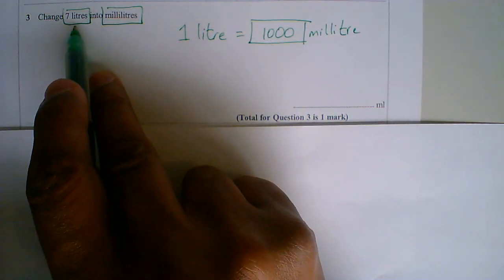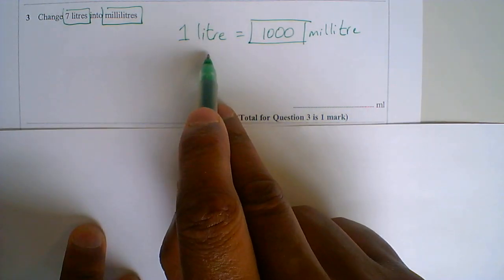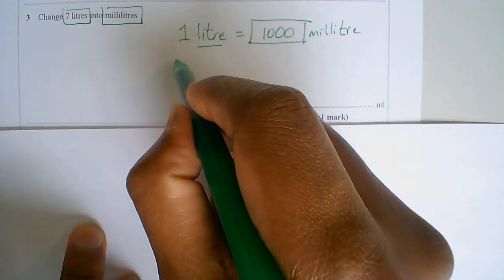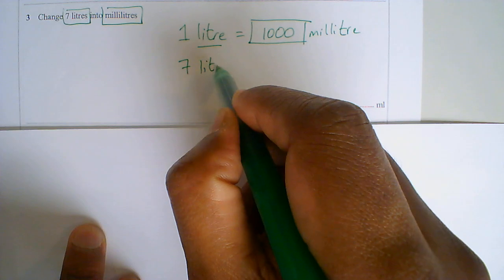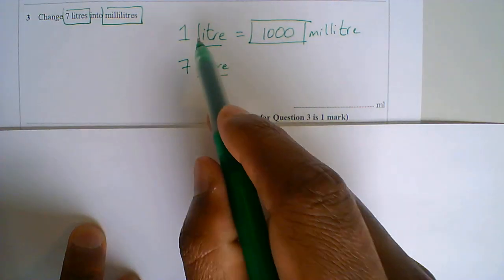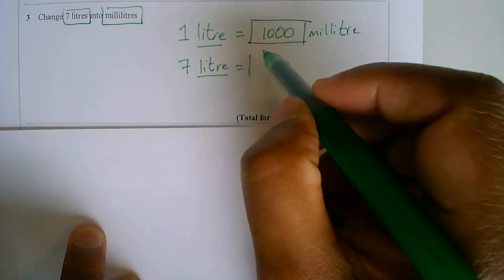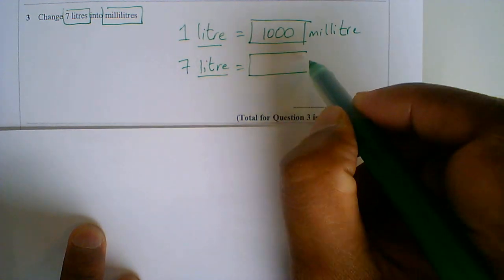So we've got 7 litres, so litres goes underneath the litre. So 7 litre, so they are matching now. So what is going to be my answer in terms of millilitre?